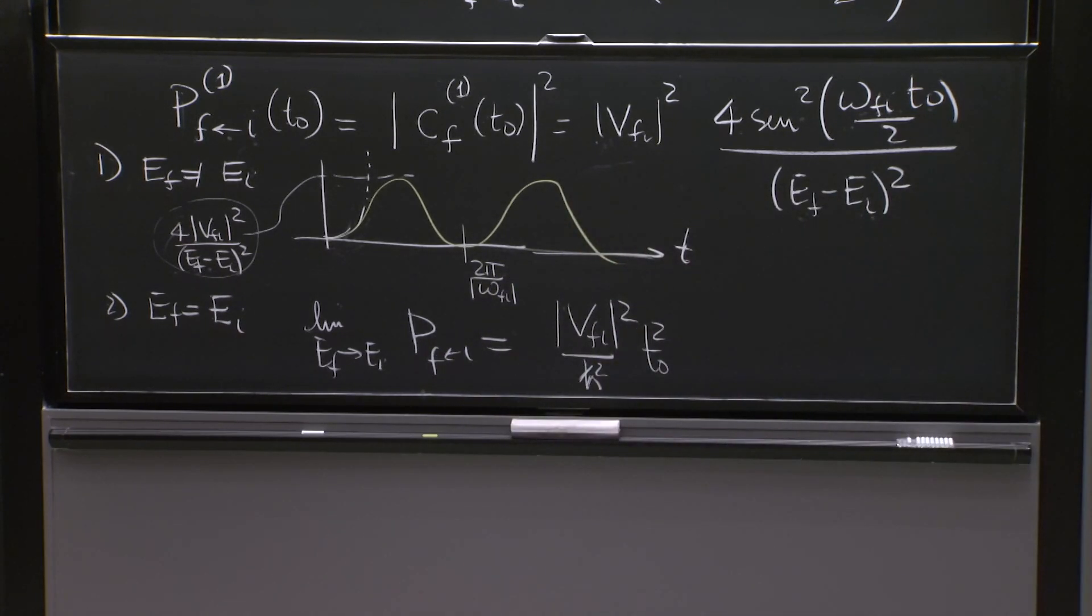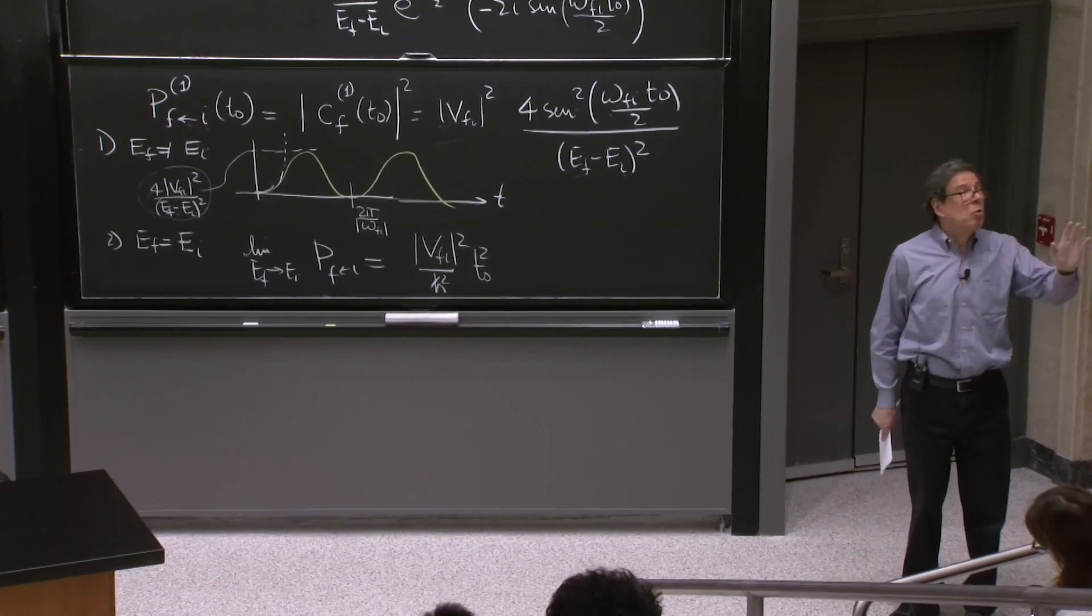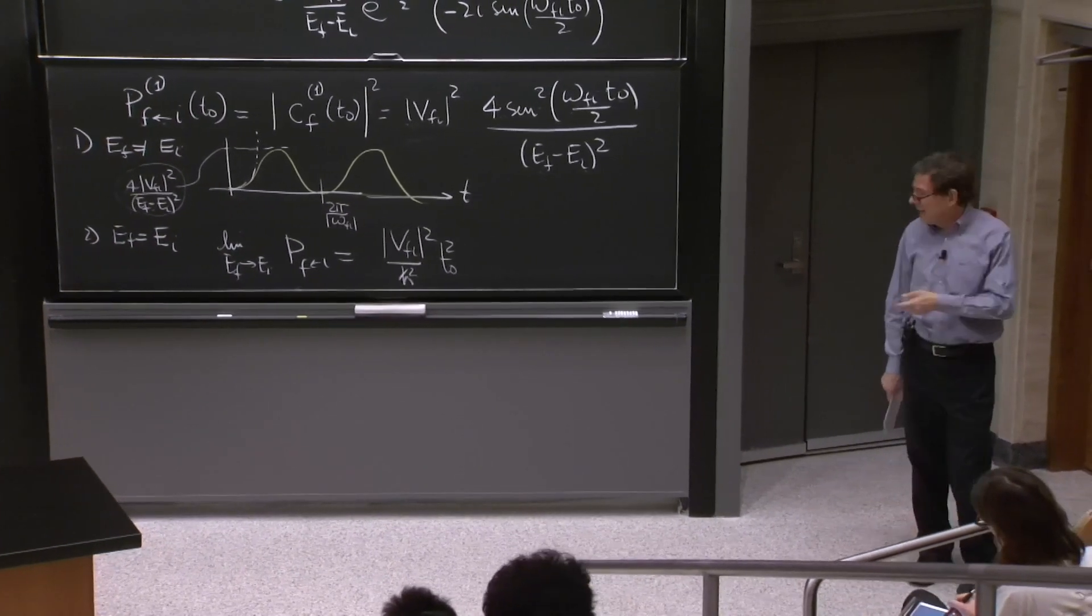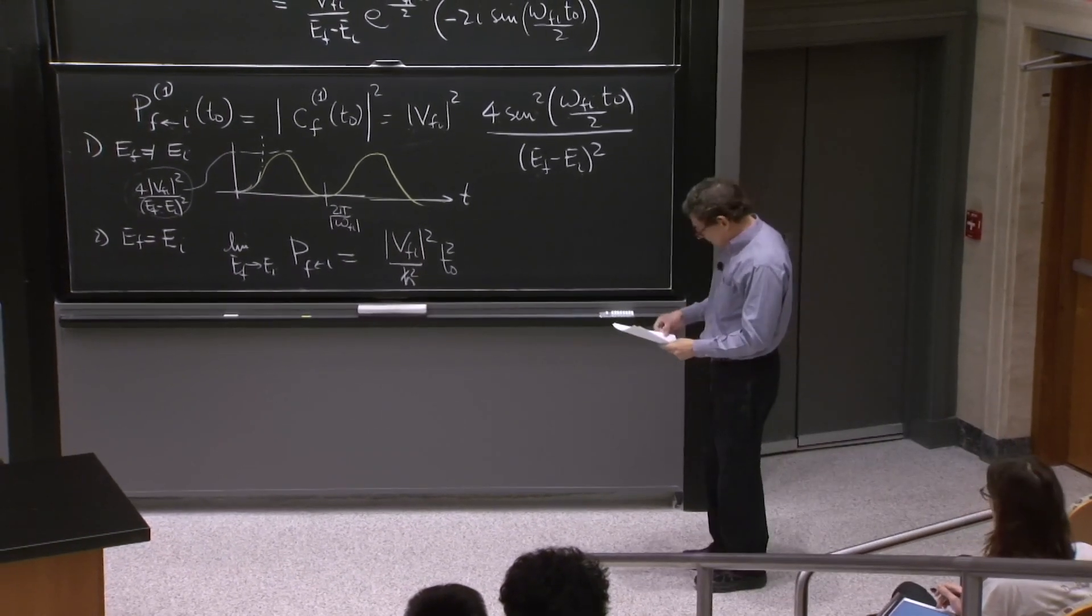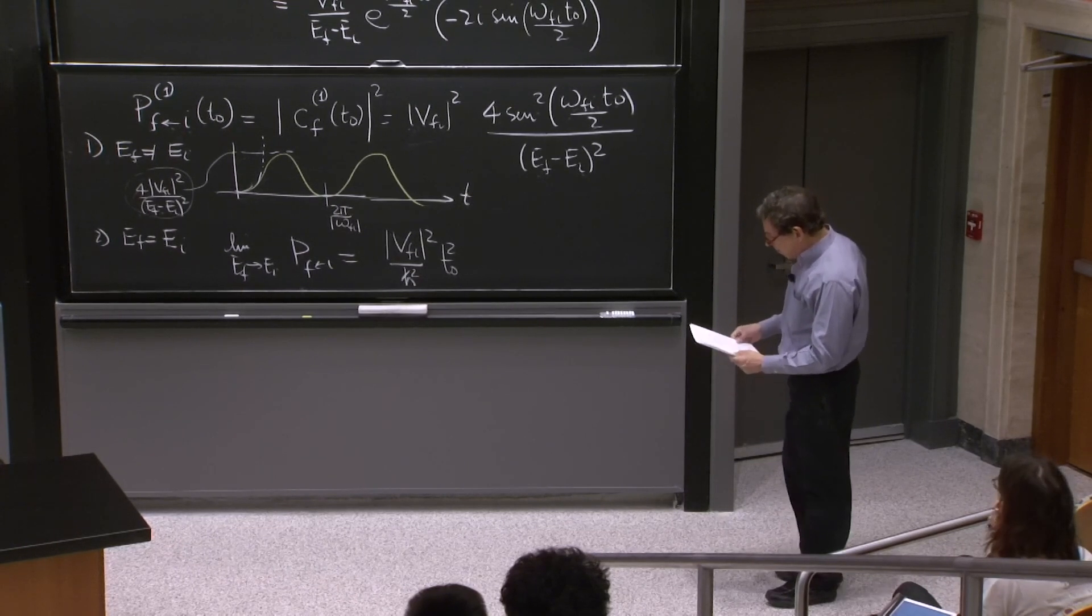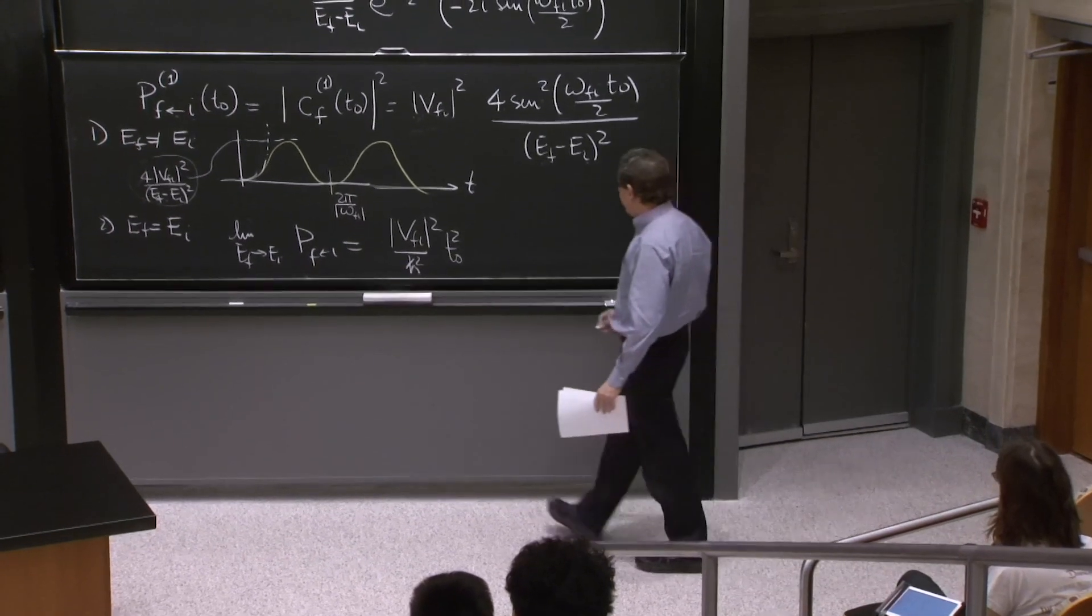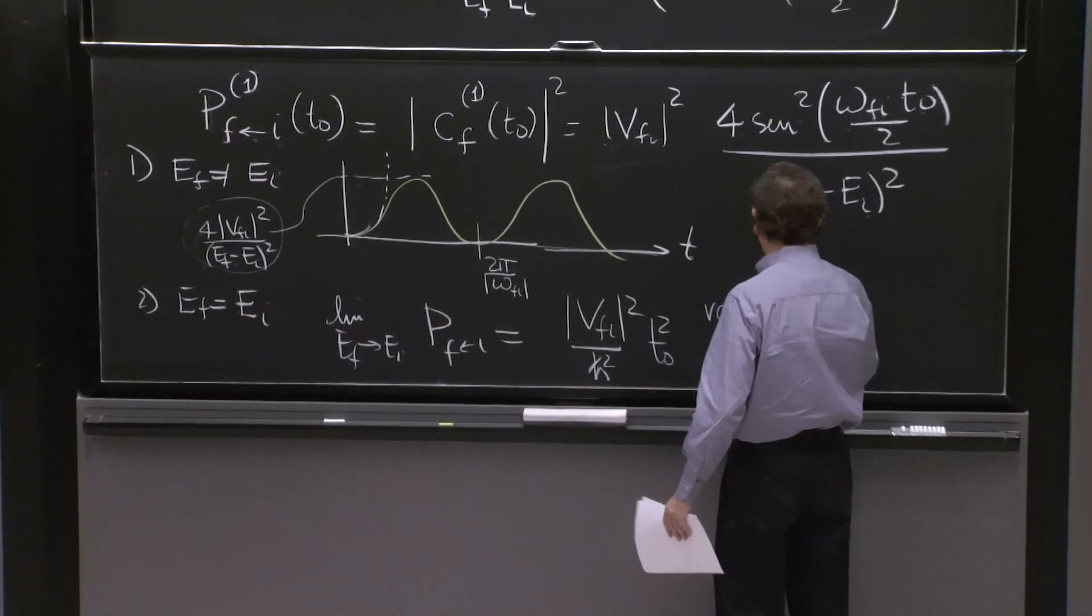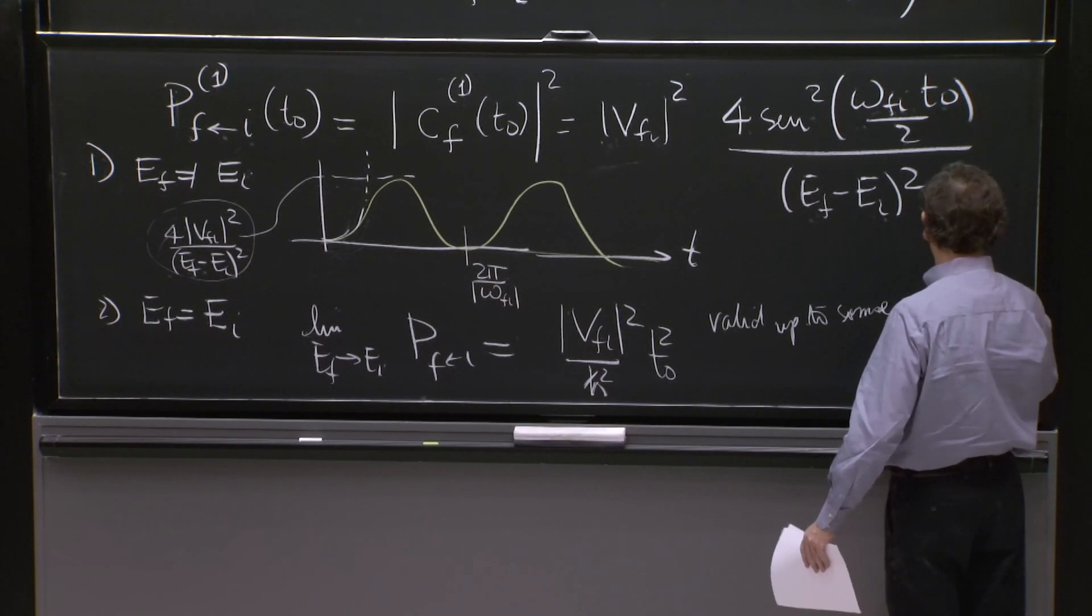OK, so here it is, the quadratic behavior, when the energy of the final state is the same as the energy of your original state. Now, the transition probability starts to grow quadratically. That cannot be valid for too long time. Because eventually, t, that number grows without bound. And that number could become as big as 1. And that transition is not reasonable.